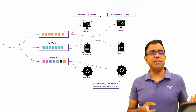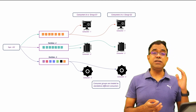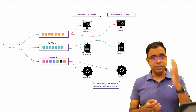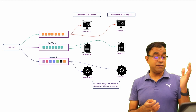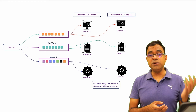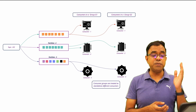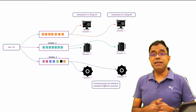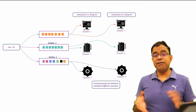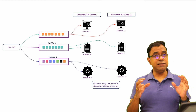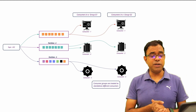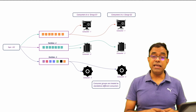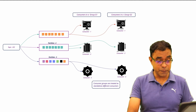Since each consumer in the group is associated with one partition, they will get unique data. Whatever data is produced by multiple producers will be consumed by the consumer group, and each consumer in the group will get unique data. You can also create another consumer group — for example G2 — which reads the same partitions independently. Both consumer groups will get all the data, which is very useful for scaling. For instance, consumer group 1 could service customers while consumer group 2 logs data to a database.